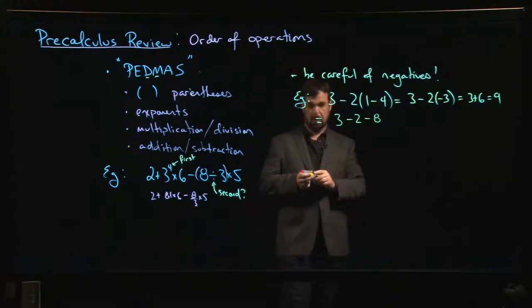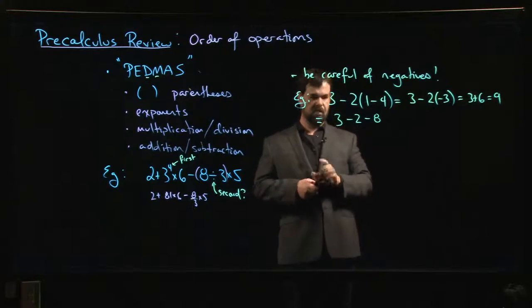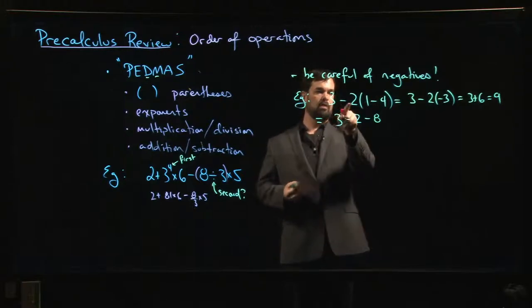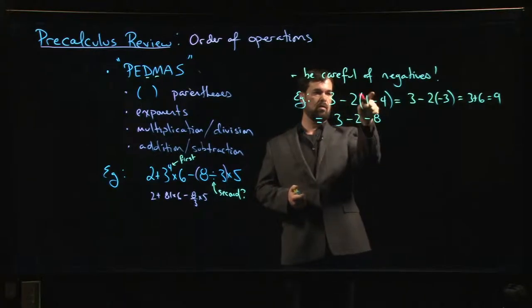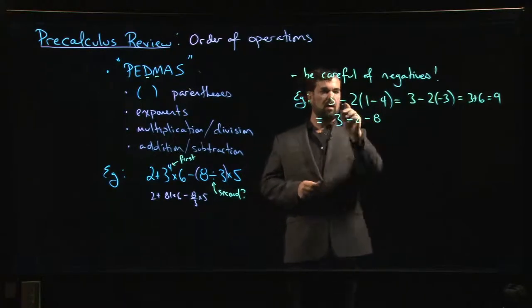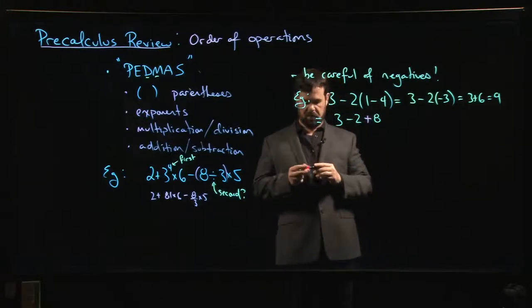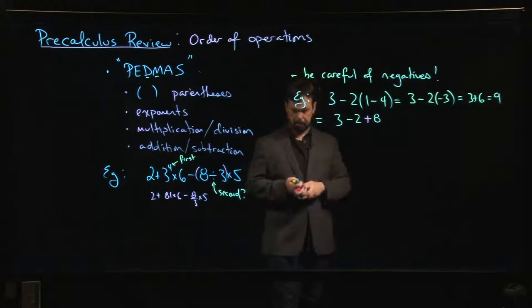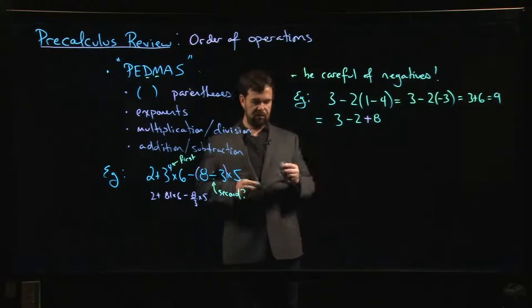They'll say 3 - 2 - 8. That's not right, is it? No, 3 - 2 - 8 doesn't give me 9. The reason it's wrong is when you distribute that 2, it's -2 × 1 and then -2 × -4. A lot of people forget there are actually two negatives there, and that should be positive. That's easy to forget. Another one that's easy to forget is the notion of implied parentheses.